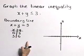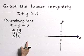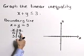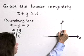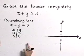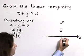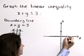So the boundary line for this linear inequality goes through the point 0,3 on the Y axis and it goes through the point 3,0 on the X axis.